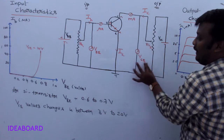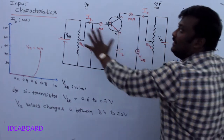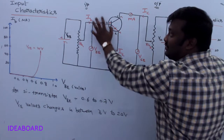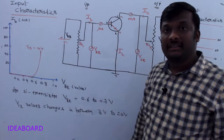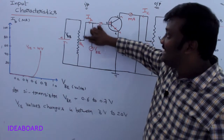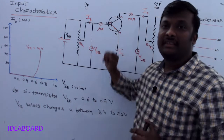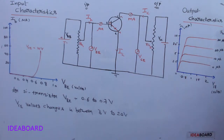While changing VCE, note the corresponding variations in collector current IC. For output characteristics, IB must remain constant. To keep IB constant, fix the slider of RH2 until IB shows a certain reading. Practically, graphs are observed for IB = 0, 10, 20, and 30 microamperes.